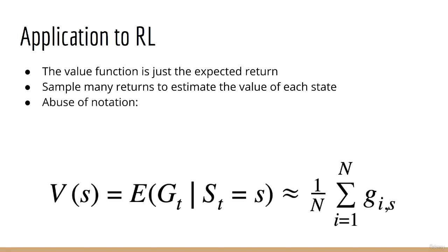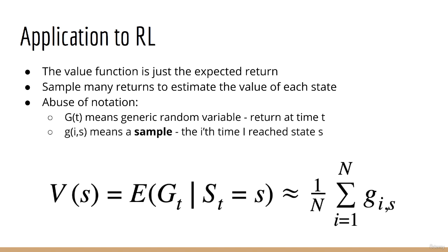You'll notice that I've abused notation a little bit here by using different indices for the return g. When I say g of t, I mean a generic return g, the return for the state at time t. But when I index g using i and s, what I mean is this is a sample of the return. It's the ith sample return from the state s.